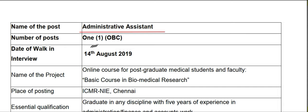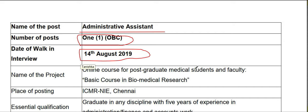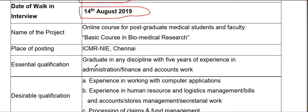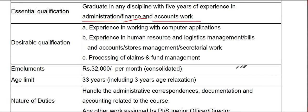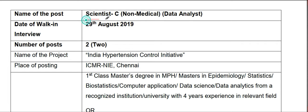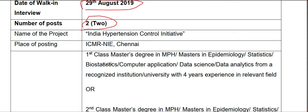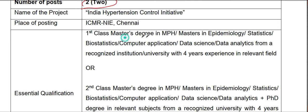The next position is Administrative Assistant. A minimum of 5 years of experience in finance and accounts is required. The amount is approximately 32 to 33 years age limit, including 3 years relaxation. The salary range mentioned is around 20 to 50.